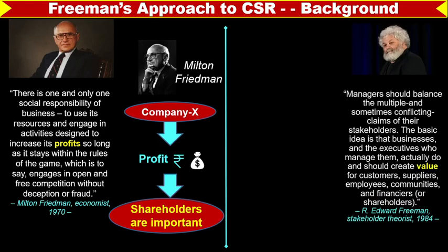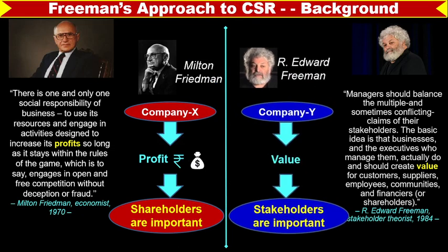After that, in 1984, R. Edward Freeman, a stakeholder theorist, stated that managers should balance the multiple and sometimes conflicting claims of their stakeholders. The basic idea is that businesses and the executives who manage them actually do and should create value for customers, suppliers, employees, communities, and financials or the stakeholders. This theory says the business has responsibility not only towards shareholders but also towards its various stakeholders — customers, suppliers, employees, and communities.